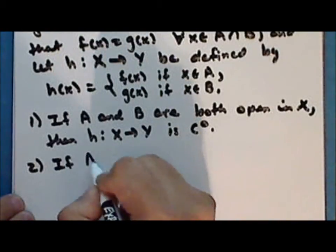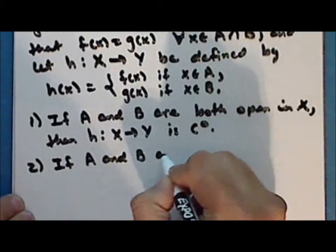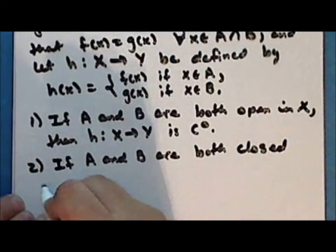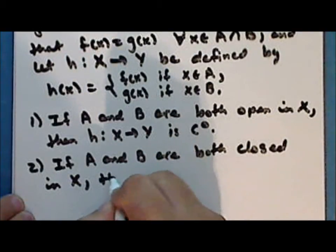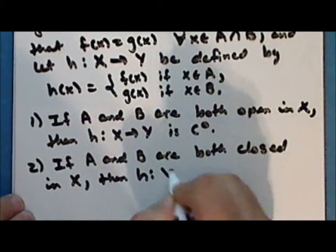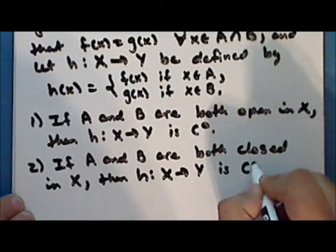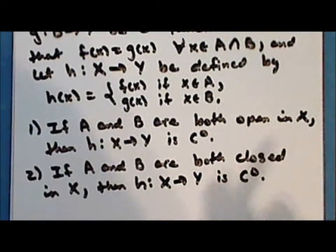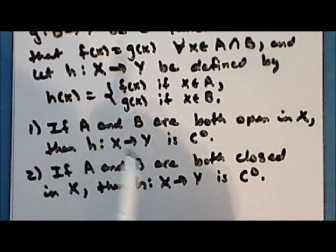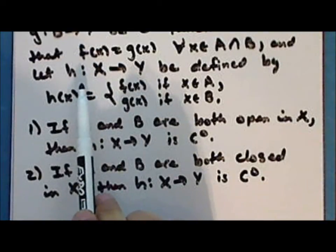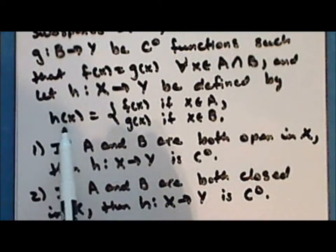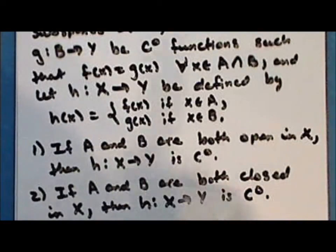And if the subspaces a and b are both closed in the space x, then the function h mapping x into y is continuous. The pasting lemmas are also called the gluing lemmas — the idea being that we can glue or paste together two continuous functions in the form of a piecewise defined function, and the result is also a continuous function.